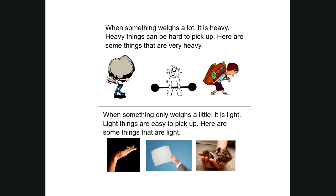When something only weighs a little, it's light, and light things are easy to pick up. Some things that are light: a person's holding a feather — if you've ever picked up a feather, it feels like you're not even holding anything. Something really light in your hand is easy to hold and easy to lift. A piece of paper, this tiny kitten — I put the kitten in because you guys know Mrs. Sheik loves cats, so I got to put the cat in for her.